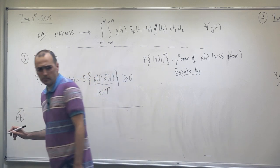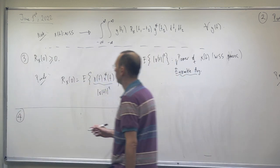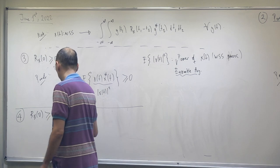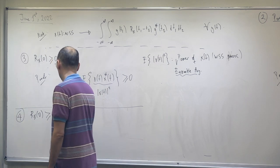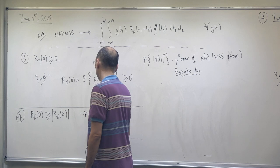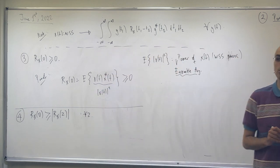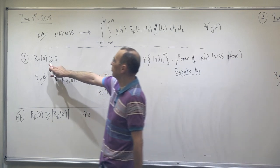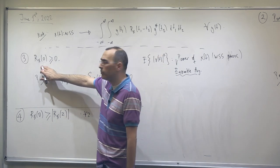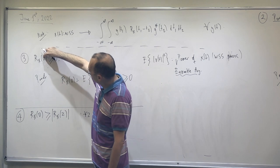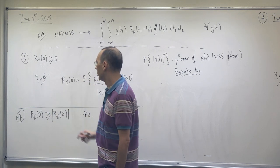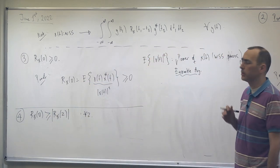Property number four: R_X(0) is greater than or equal to |R_X(τ)| for all τ. This means the peak value of the autocorrelation is at τ = 0. Since it is an even function with a positive value at zero, this is the peak — or at least one of the peak values, since equality may hold elsewhere.